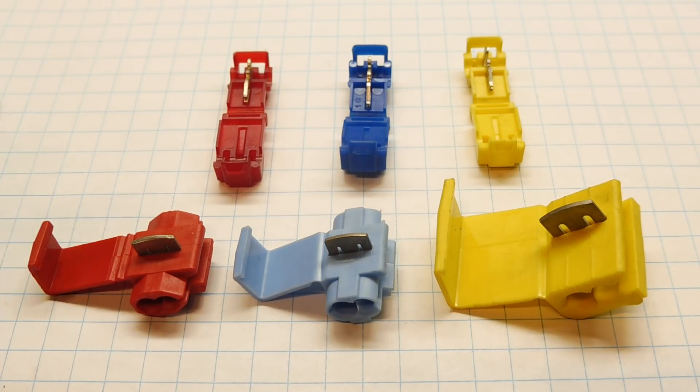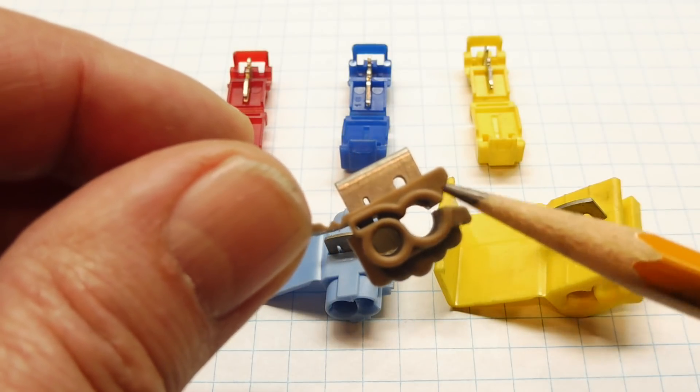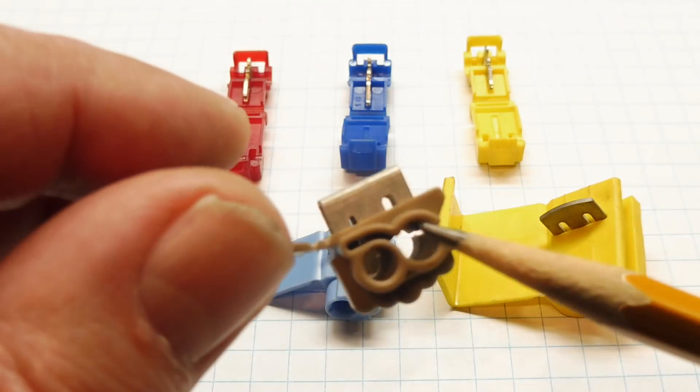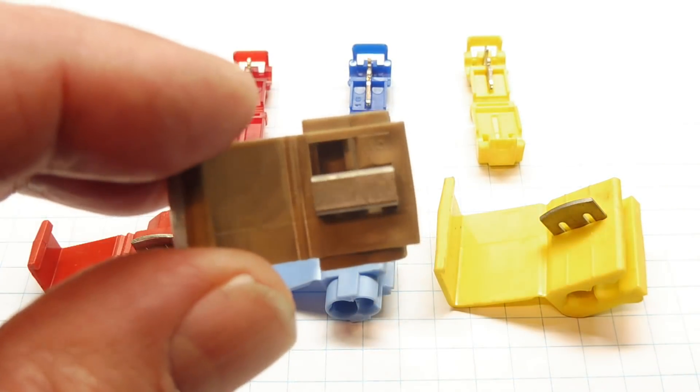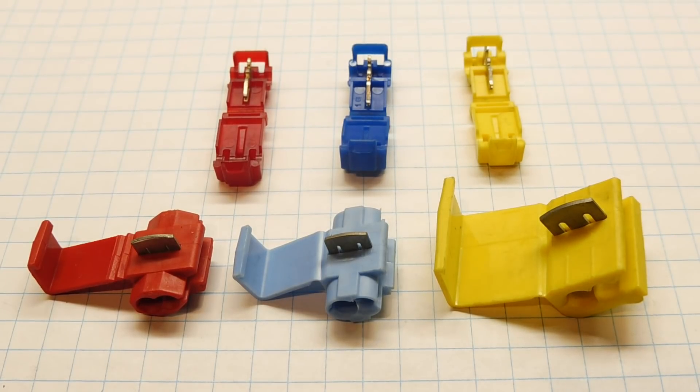You could also get the type that has two gauges, so you could have a large gauge wire and a small gauge wire. In case you have to tap into a large gauge wire with a smaller gauge wire, you could use this type of tap. It's also good to use a good vendor. These are made by 3M, so I know they're going to be reliable.